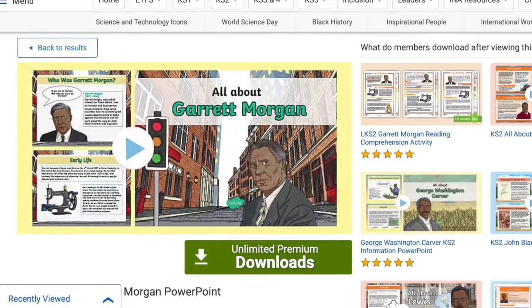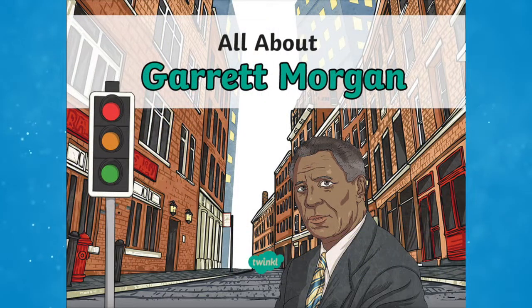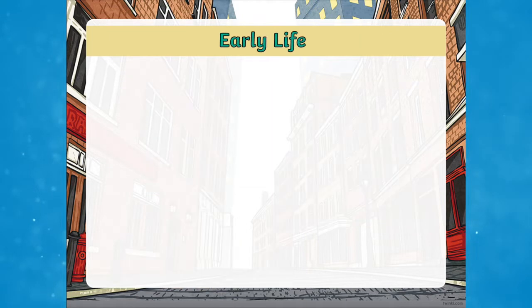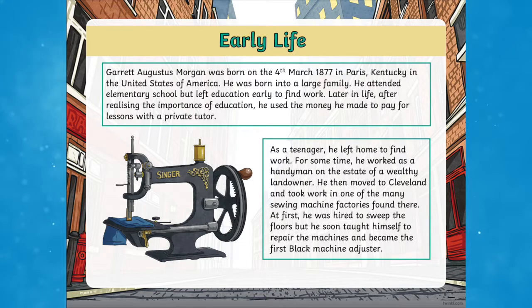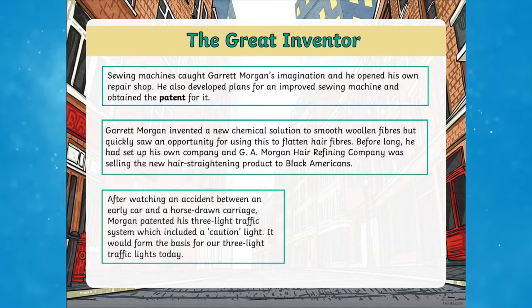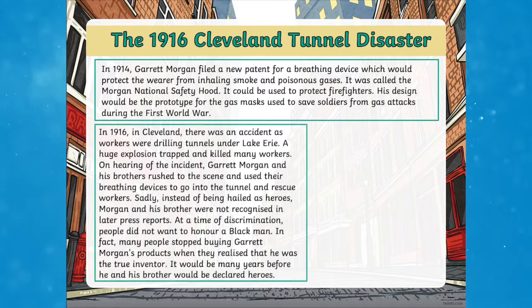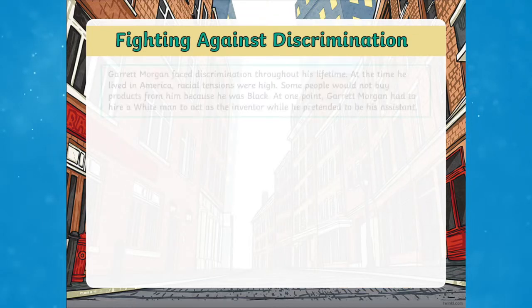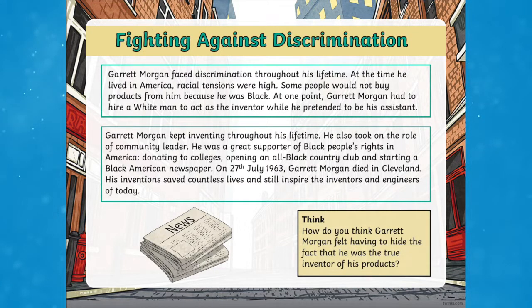The Key Stage 2 All About Garrett Morgan PowerPoint can be used to introduce Key Stage 2 children to the incredible life and work of little-known scientist and inventor Garrett Morgan. The PowerPoint shows the impact his inventions had on society and describes how he overcame prejudice and discrimination to reach his goals. Why not use his inspiring story to foster the characteristics of determination and resilience in the next generation of inventors and engineers in your class.